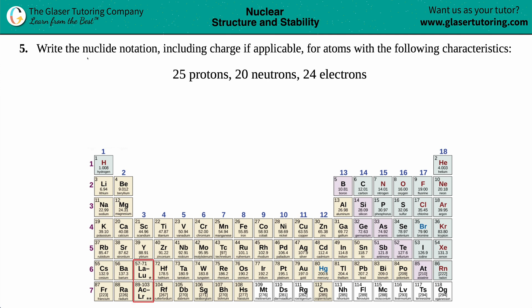Number five, write the nuclide notation, including charge if applicable, for atoms with the following characteristics. We have our example here. So we have to write a nuclide notation with 25 protons, 20 neutrons, and 24 electrons. Let's go.